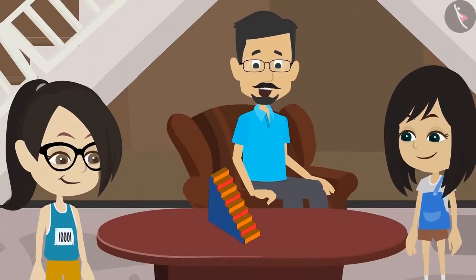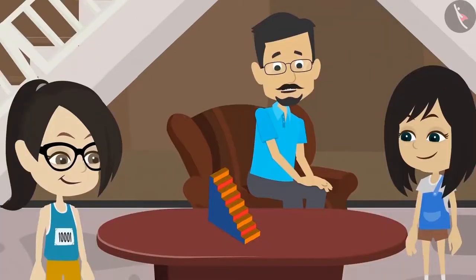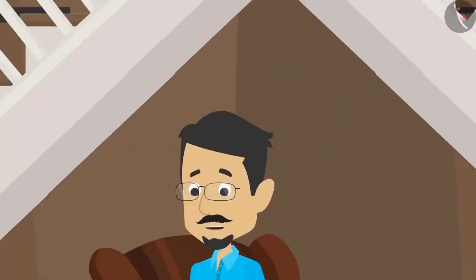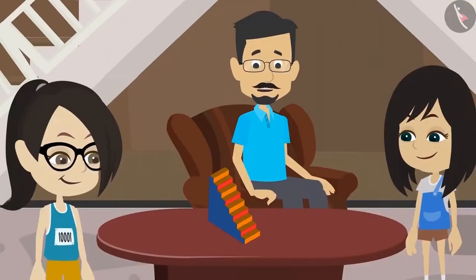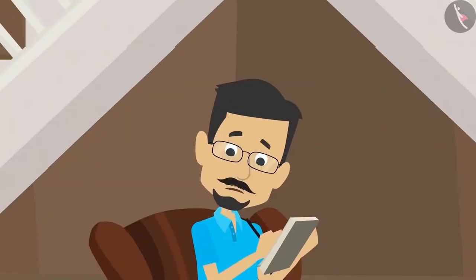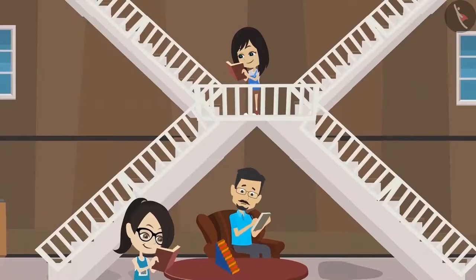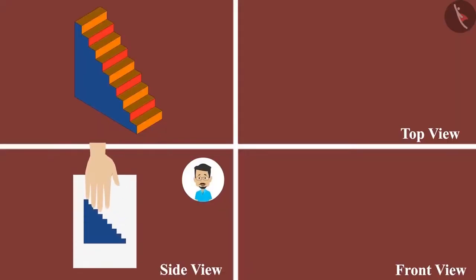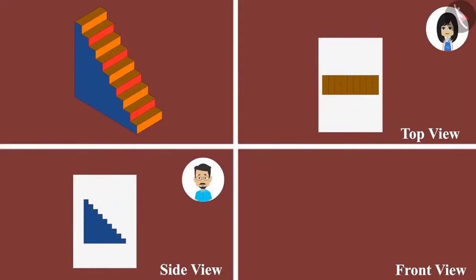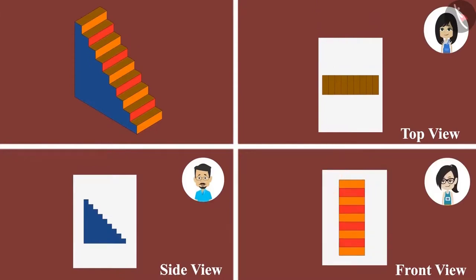We will make this picture from different angles. I will make it from the side. Vandana, you make it from the front because you can see it from the front. And Neha, you make it from upstairs because you will then be able to see it from the top. I have completed the drawing from my side. Even mine is complete. Even I have completed it. The three of us have made a picture of the same staircase seeing it from different sides.